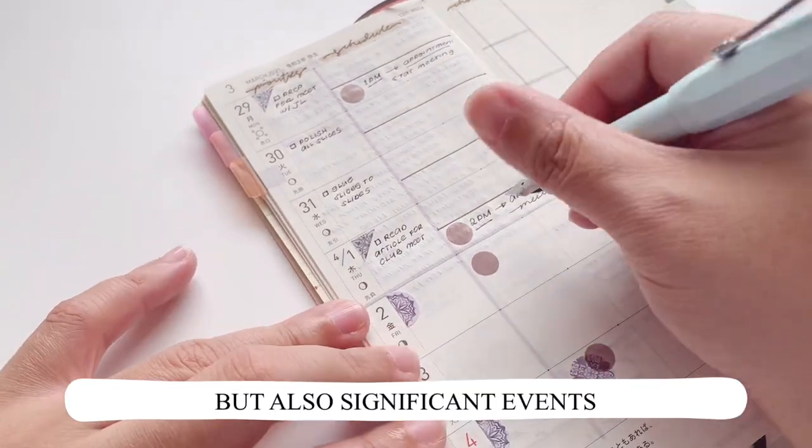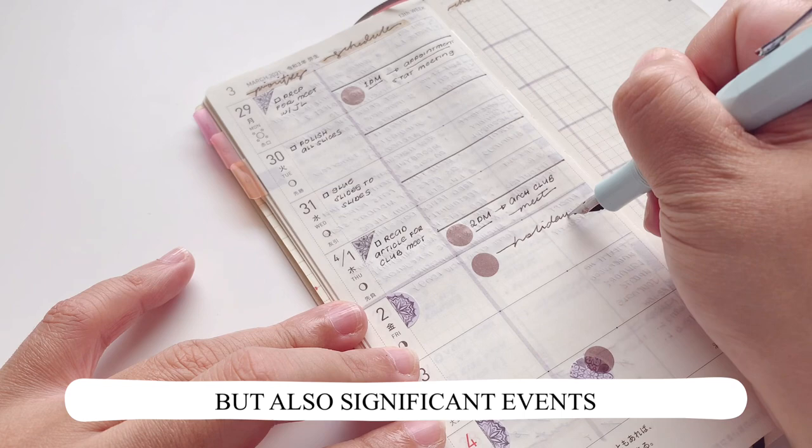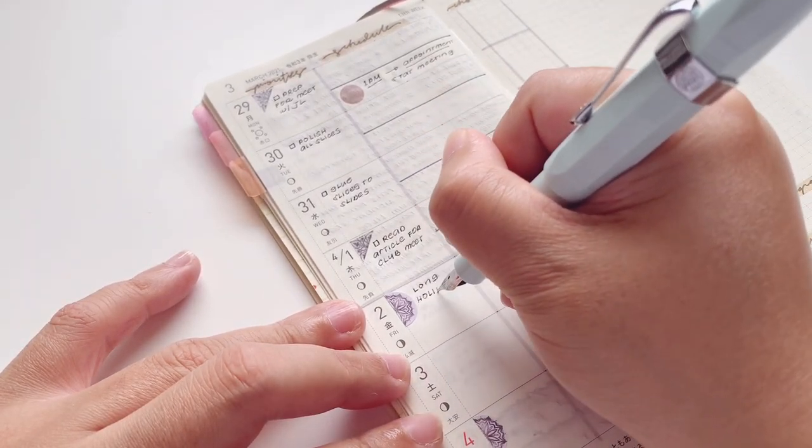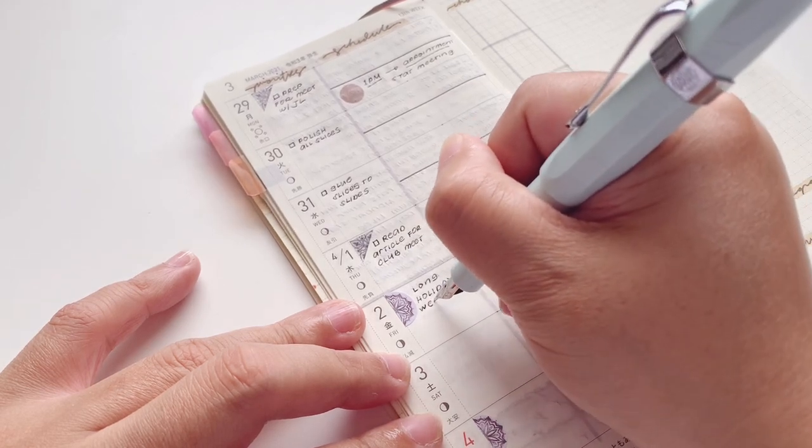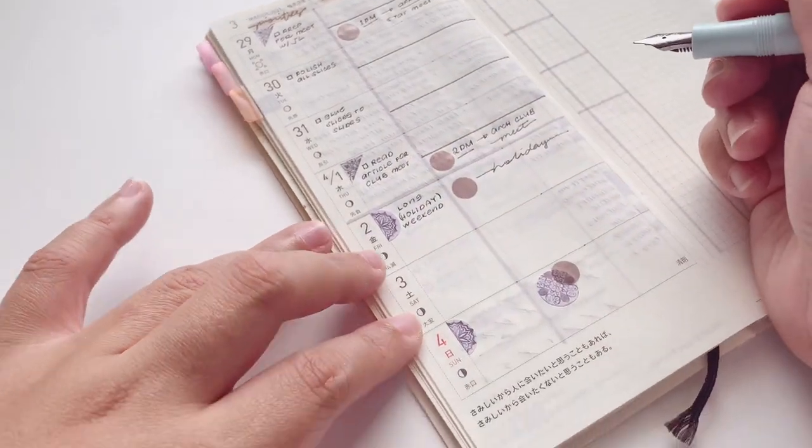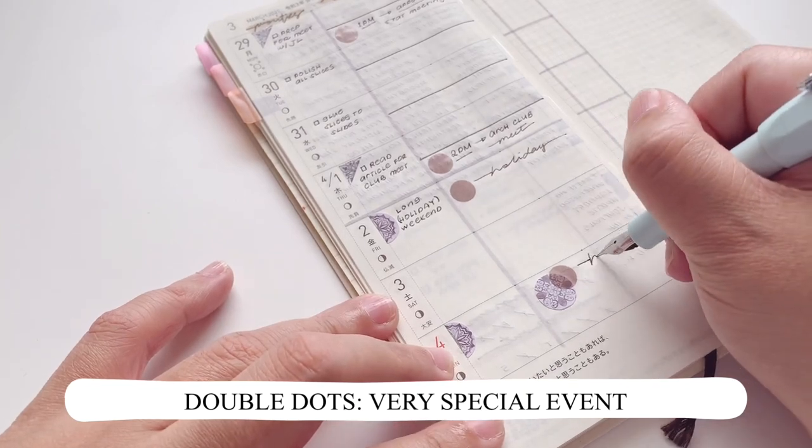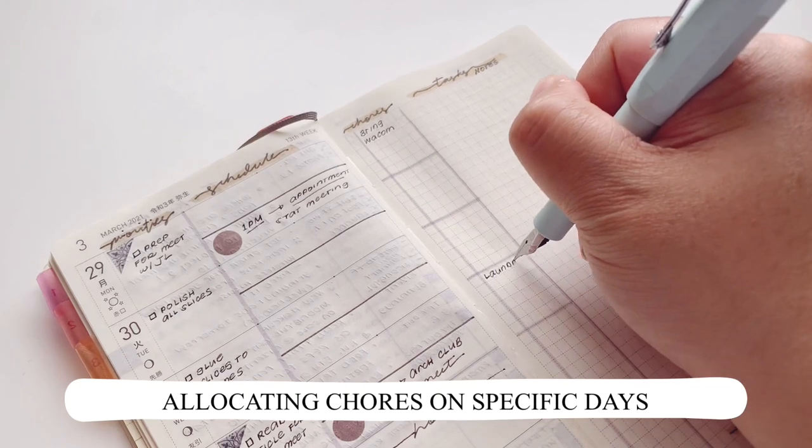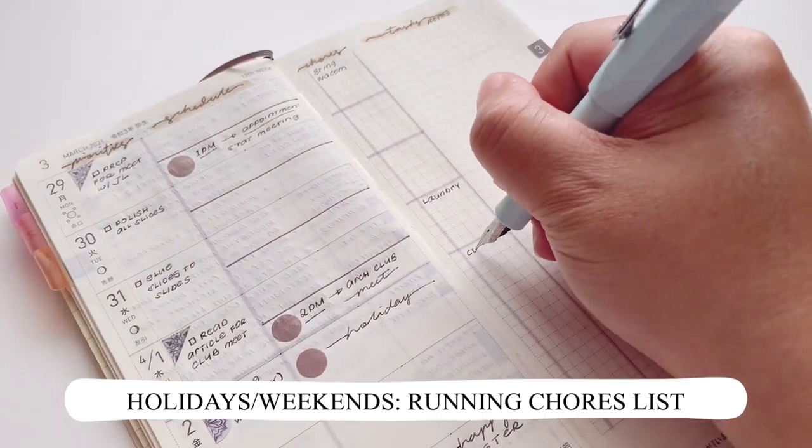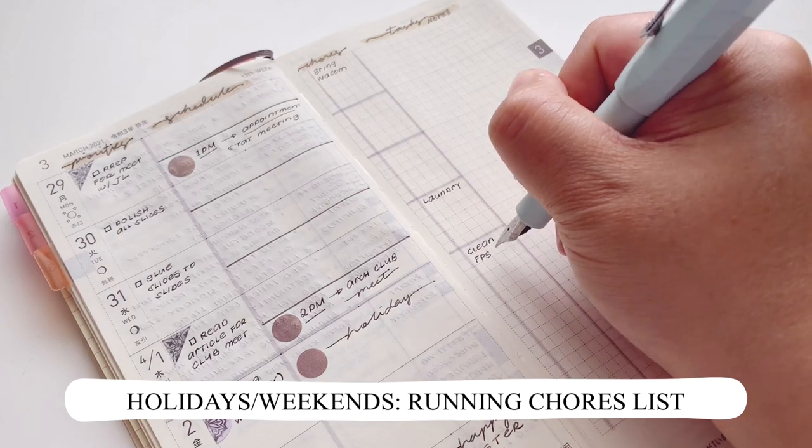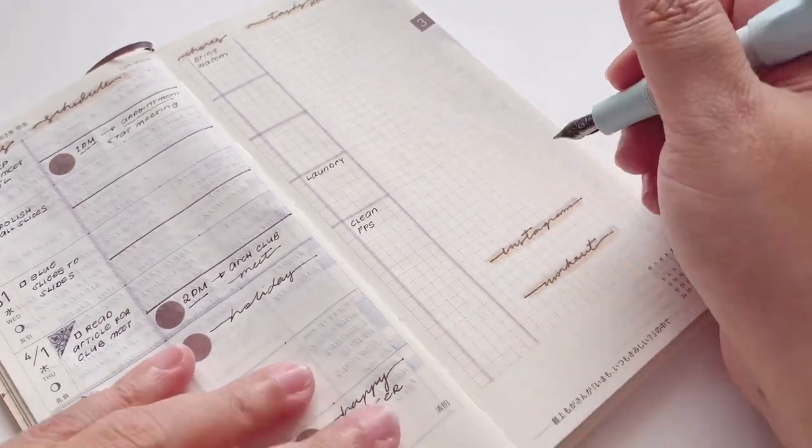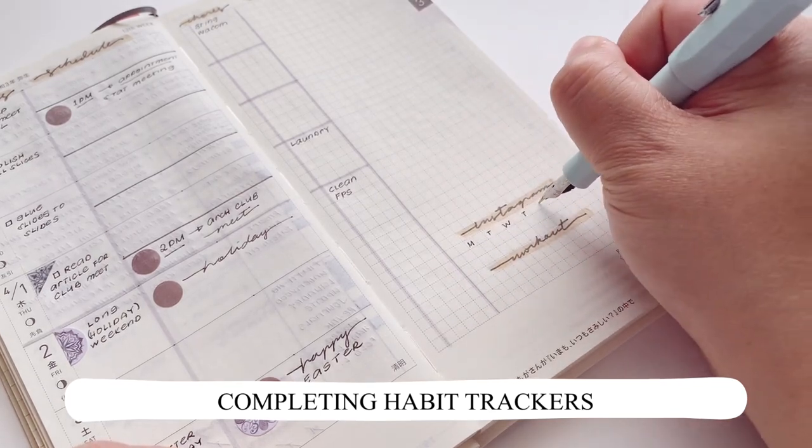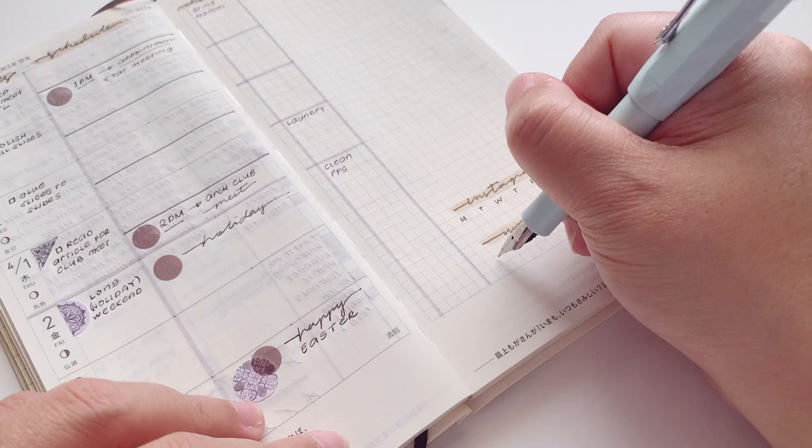Now for significant events I'd put down what it is and mark it with another clear dot sticker and then I write the details down on priority because we have a long weekend. I don't have any work priorities on those days so I have left that blank. I also allocated chores on specific days with the exception of the long holiday we have which is just going to be a running checklist because I don't want to pressure myself into doing too many things on holidays.